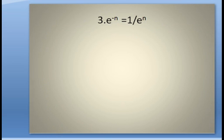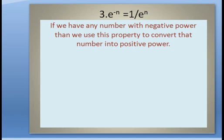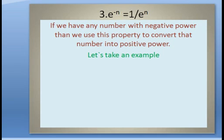Now come to the third property: e to the power minus n is equal to 1 by e to the power n. If we have any number with a negative power, we use this property to convert it into a positive power. If we divide 1 by that number, the power converts to positive. For example: 2 to the power minus 3 — we use this property here.